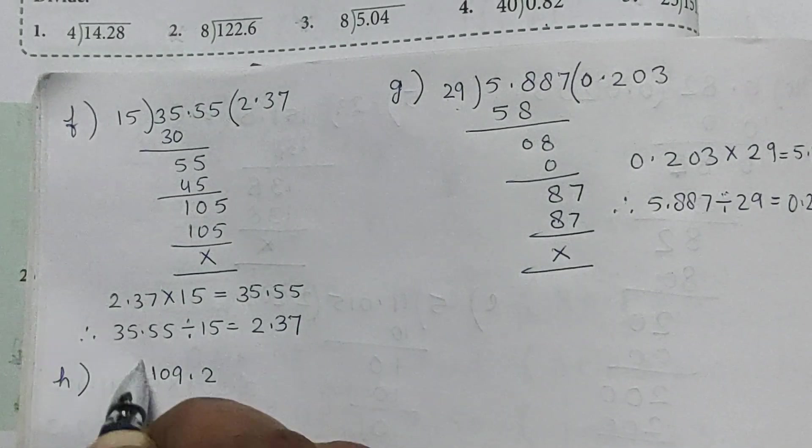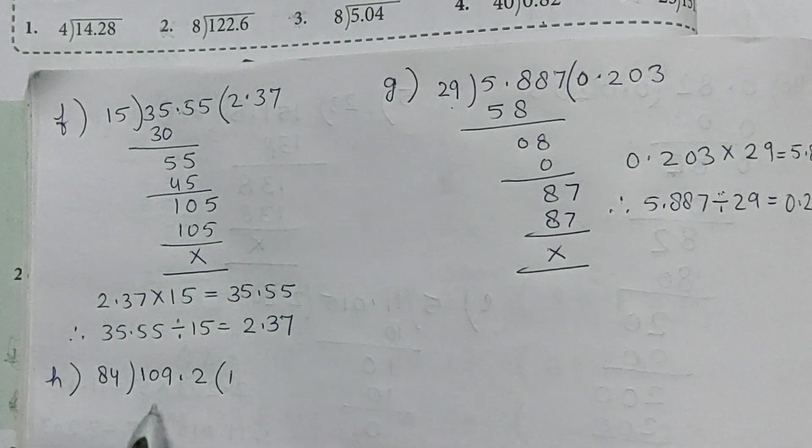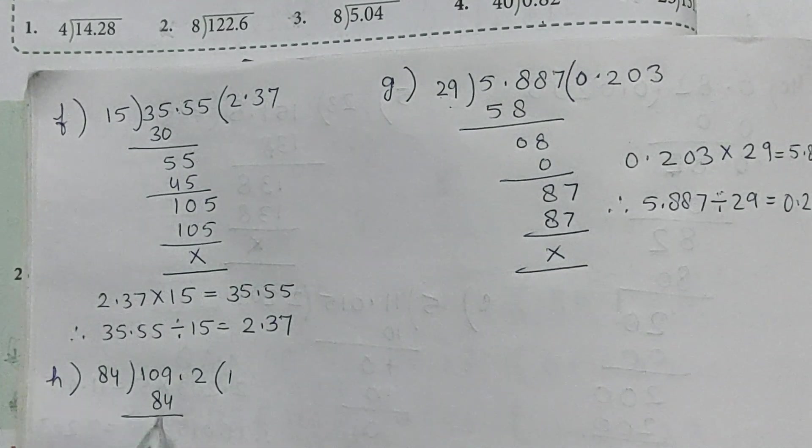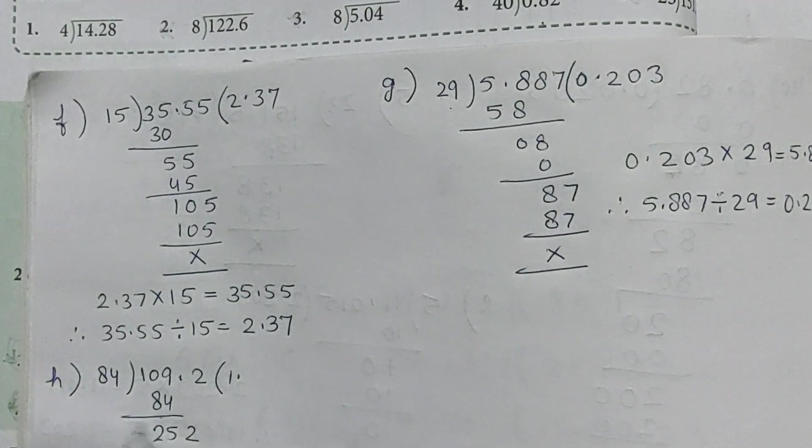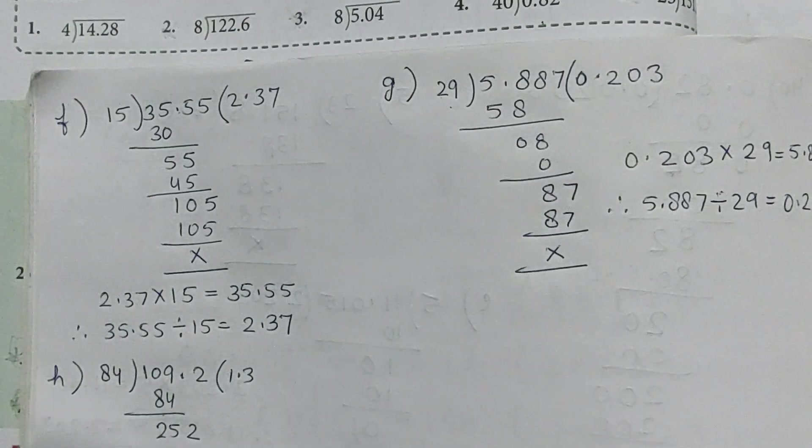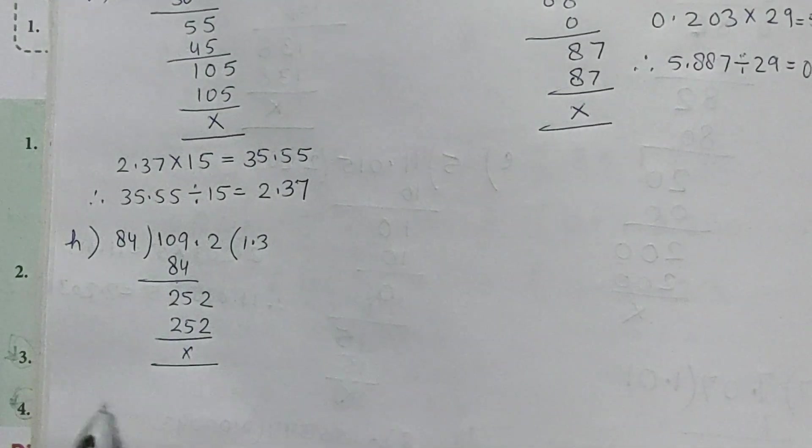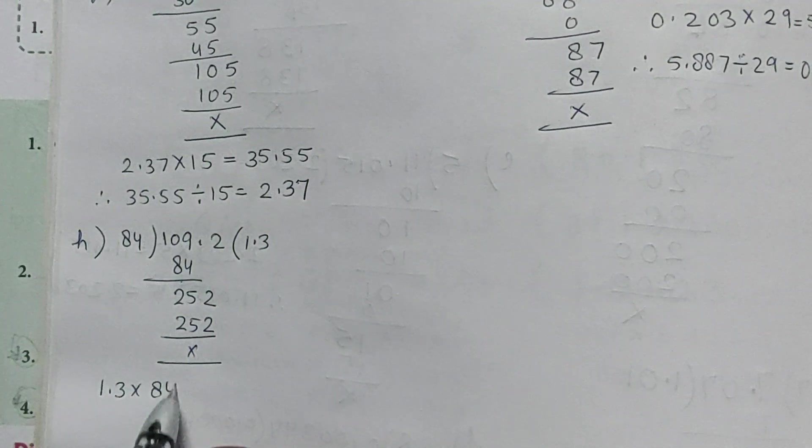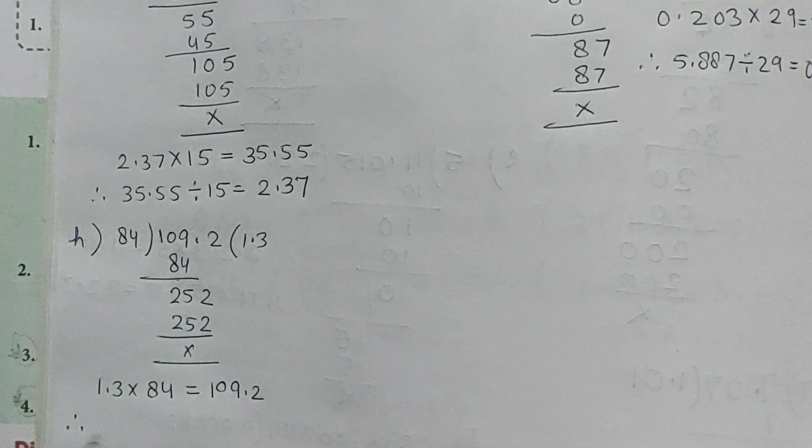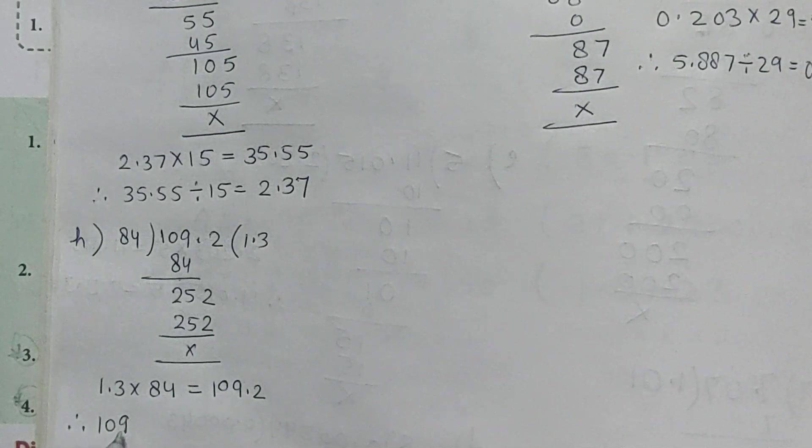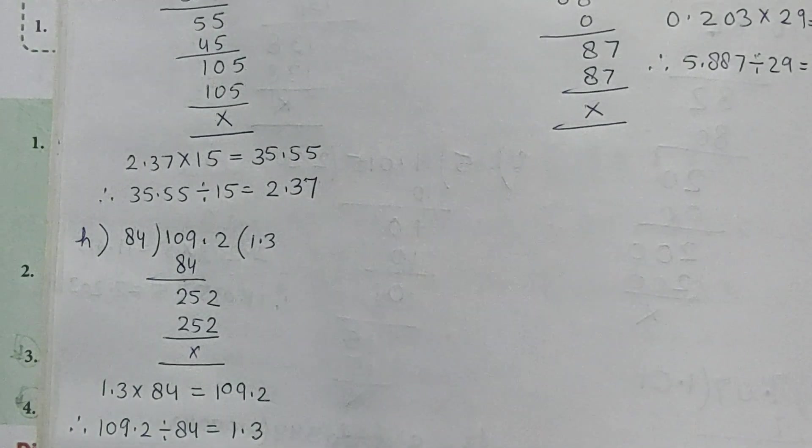Now part H: 109.2 divided by 84. So 84 into 1 is 84. 109 minus 84 is 25. Bring down 2, which gives 252. 84 into 3 is 252. Therefore, 109.2 divided by 84 is equal to 1.3.